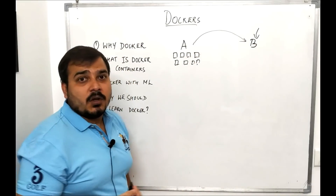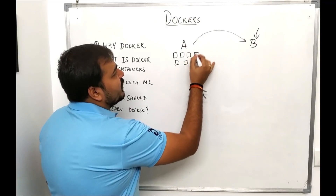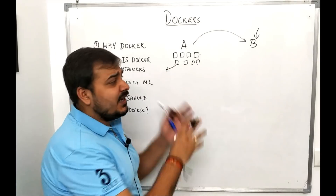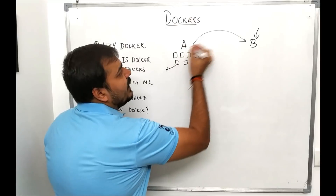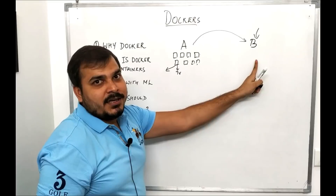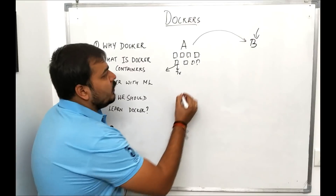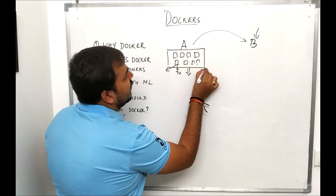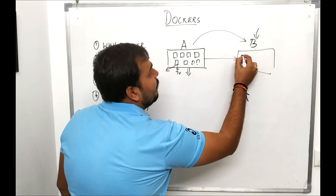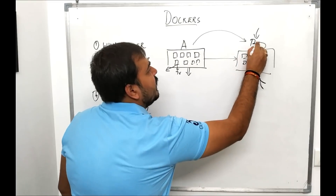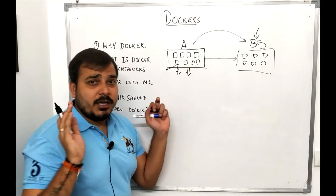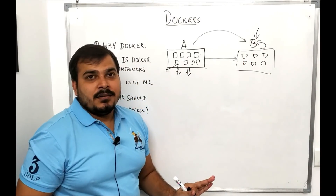Now if you transfer all these items one by one to house B, it is possible you may miss one item — say the television — and without it the house won't look good. The solution is to containerize: put all items inside a container, transfer the whole container to house B, and then unpack everything. With a container, there is very little probability you'll miss any item.